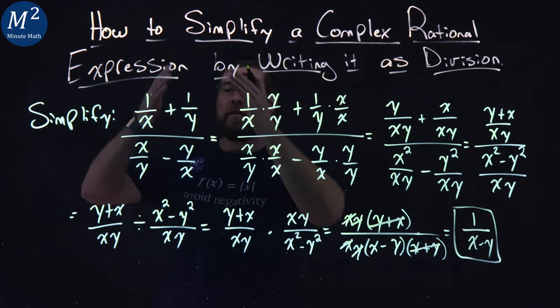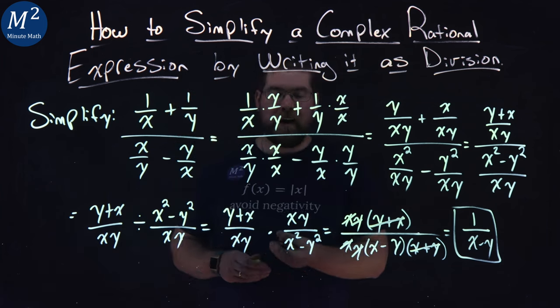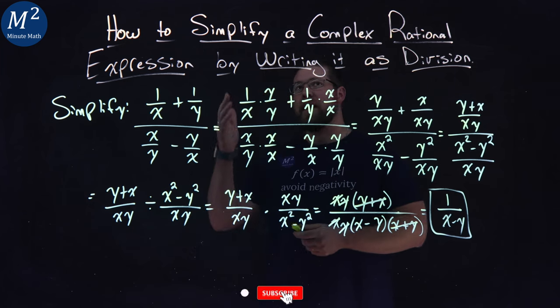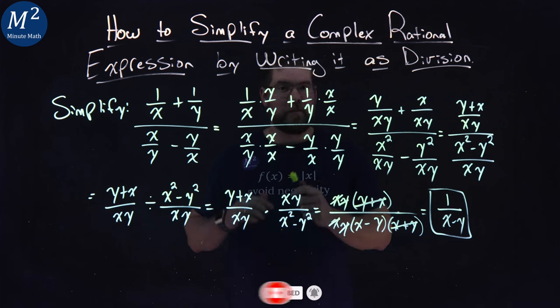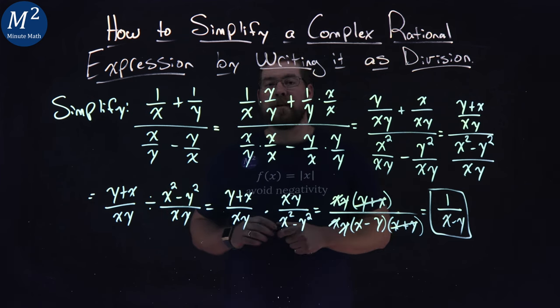And there we have it. This whole thing that we had simplified to just be a 1 over x minus a y. Well, I hope you learned something here on how to simplify a complex rational expression by writing it as division. If you did, make sure you like this video and subscribe to our YouTube channel. This helps us make more of these free math lessons for you and for everyone else.